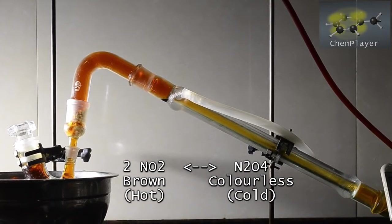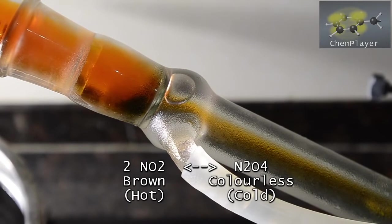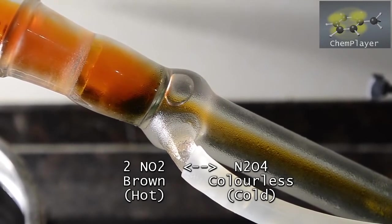At lower temperatures the dimer species, which is colorless, is favored. And you can see here in our apparatus, as the gas passes into the chilled condenser it changes to a paler color.